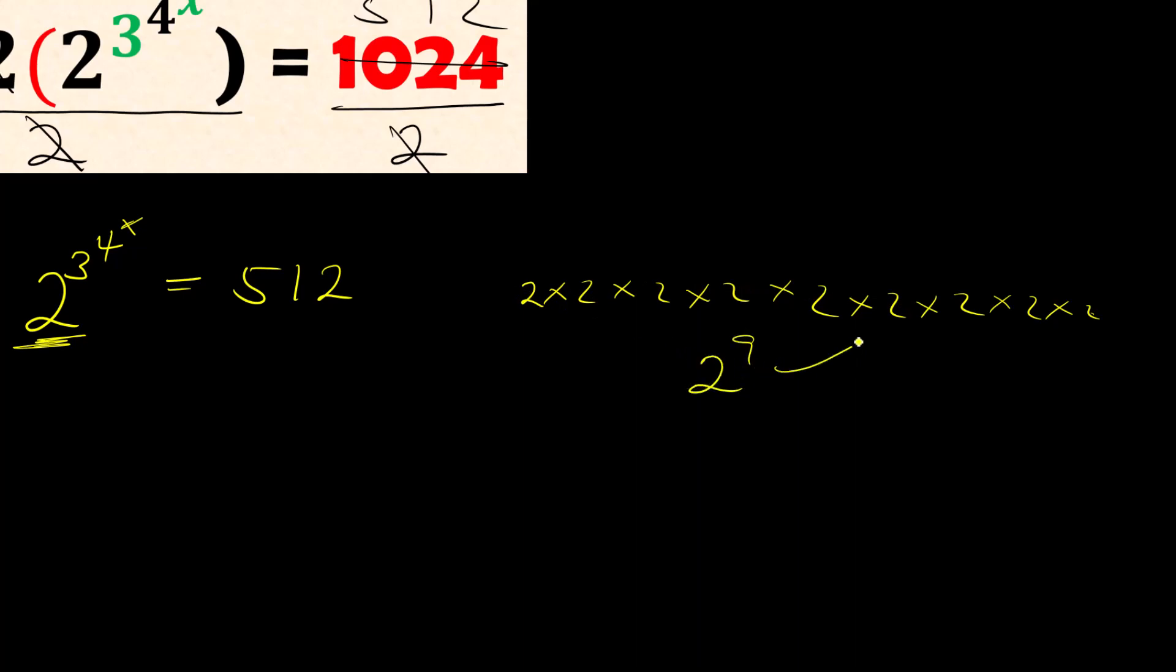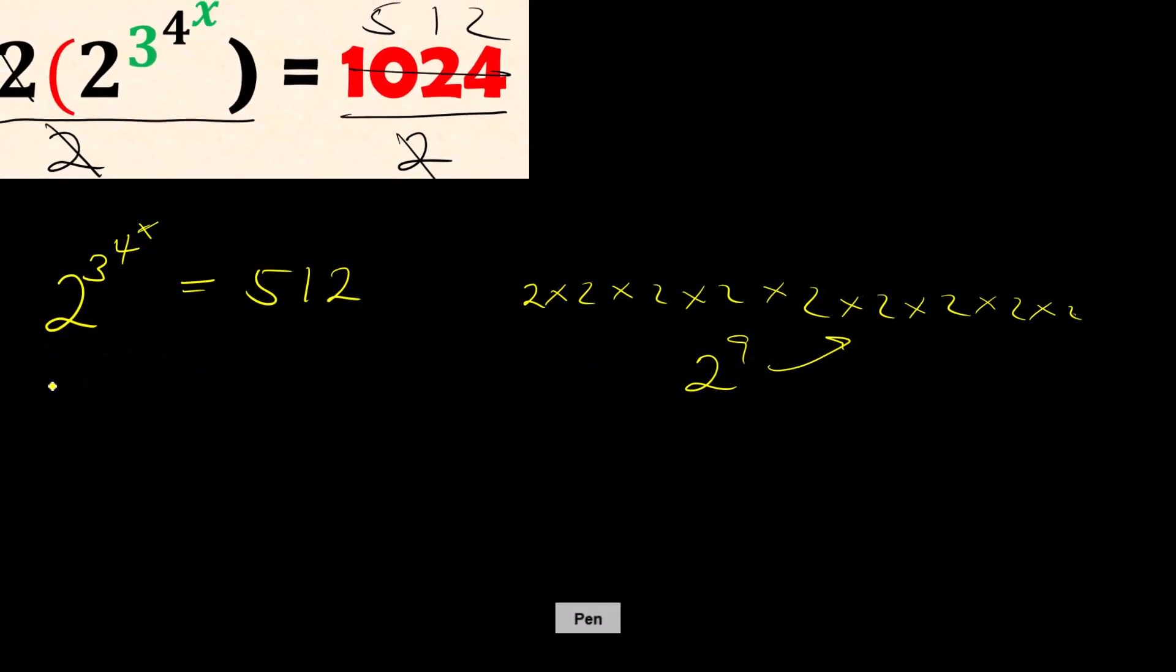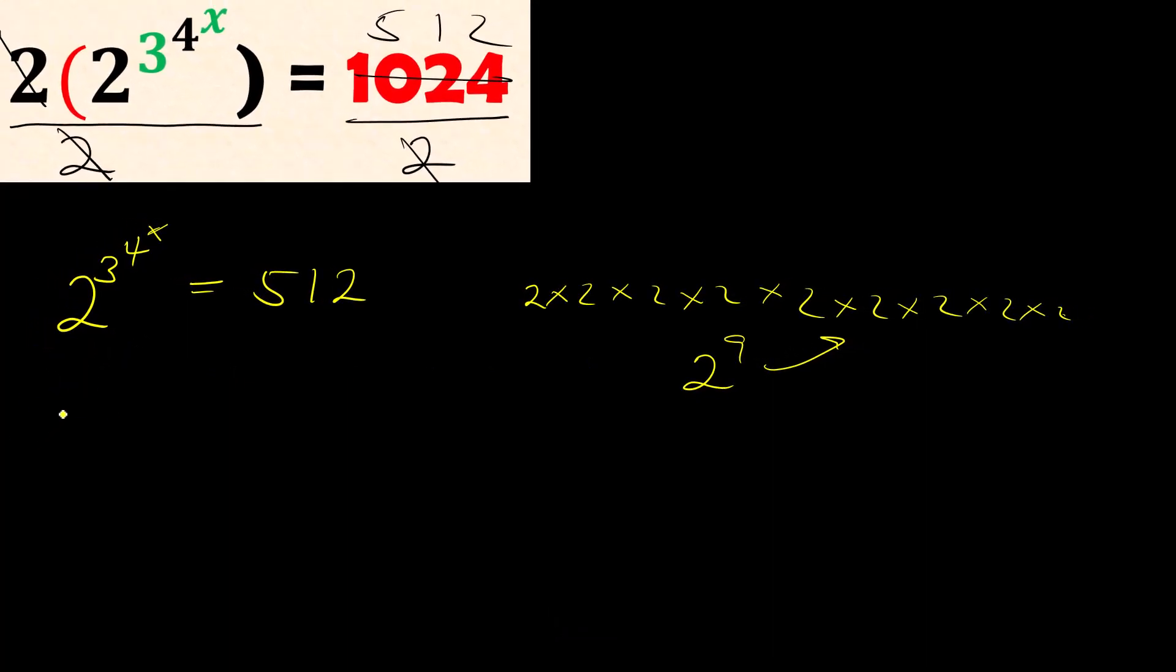So 2^(3^(4x)) = 2^9, which is 512. The bases are equal, so we can equate the exponents: 3^(4x) = 9.